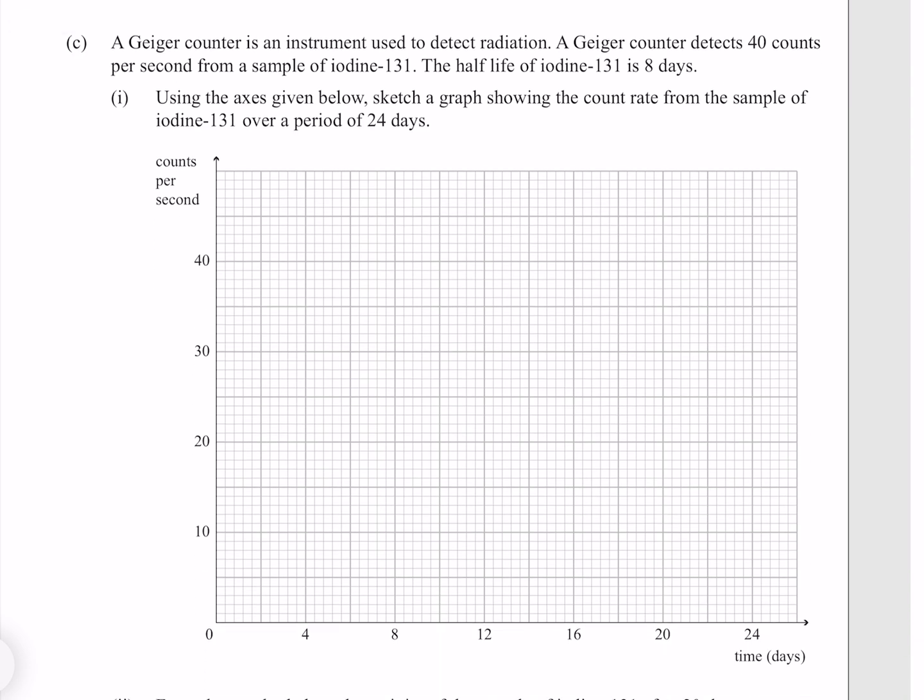A Geiger counter is an instrument used to detect radiation. A Geiger counter detects 40 counts per second from a sample of iodine-131. The half-life of iodine-131 is 8 days. Using the axes given below, sketch a graph showing the count rate from the sample of iodine-131 over a period of 24 days. We know that our count rate is starting at 40, and that after one half-life, which is 8 days, our count rate will have halved. Half of 40 is 20. After another 8 days, which is 16 days, our count rate will have halved again. Half of 20 is 10. And finally, after another 8, we're at 24 days, where our count rate has once again halved. Half of 10 is 5. So now we just need to draw our line.